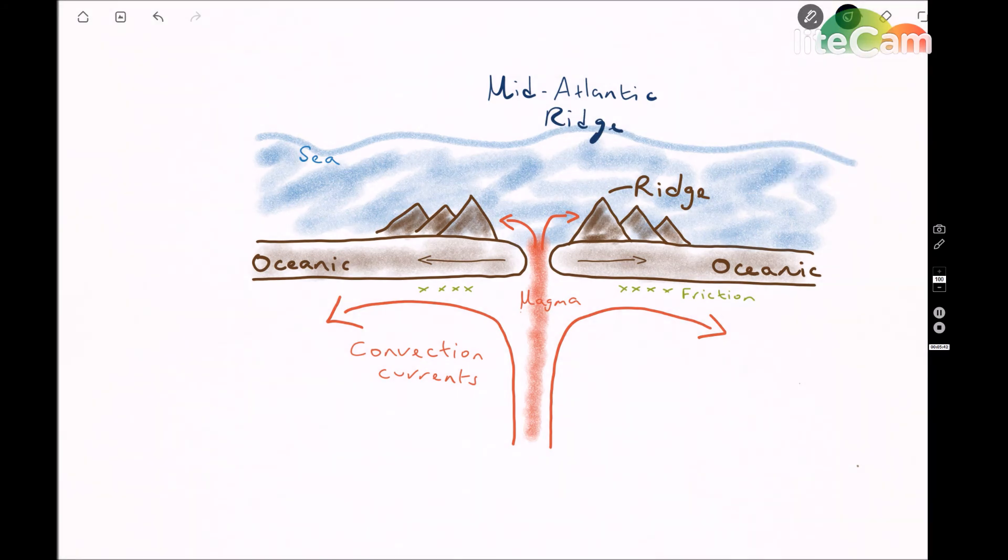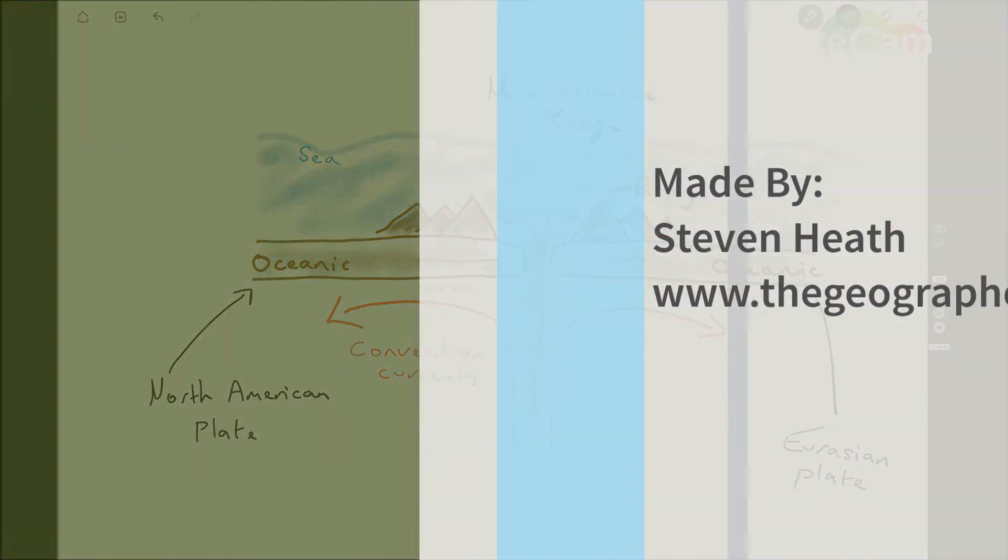The mid-Atlantic ridge runs all the way up the Atlantic Ocean, and typically separates the North American plate and the Eurasian plate in the Northern Hemisphere. If you want to use the Southern Hemisphere example, you can talk about the South American plate and the African plate.